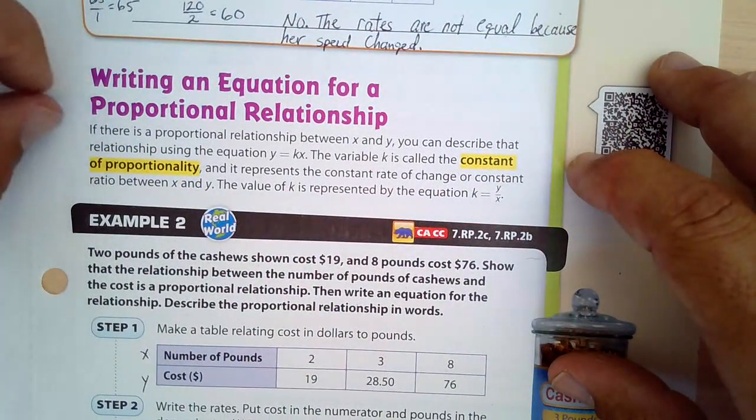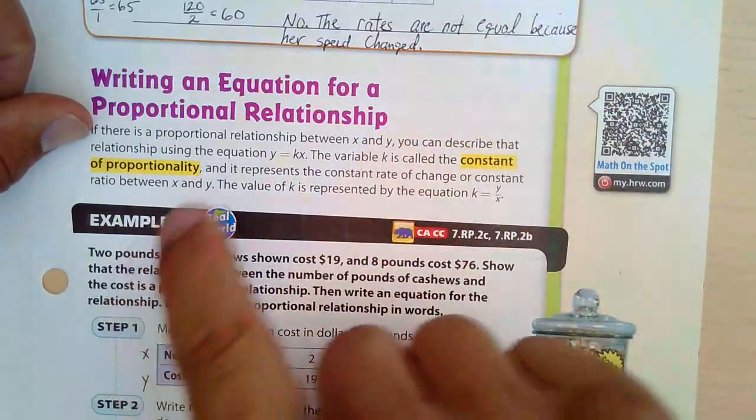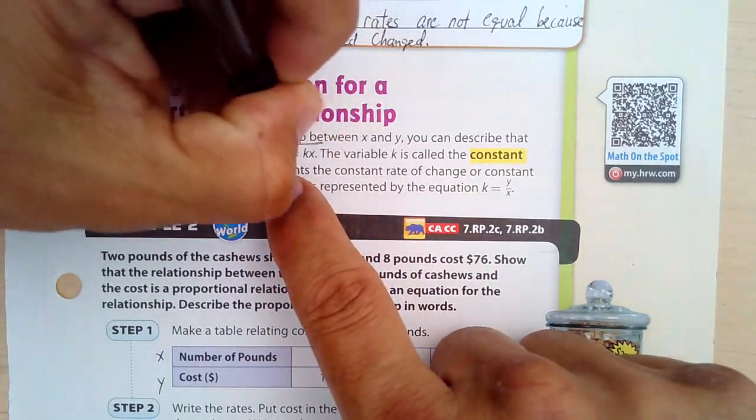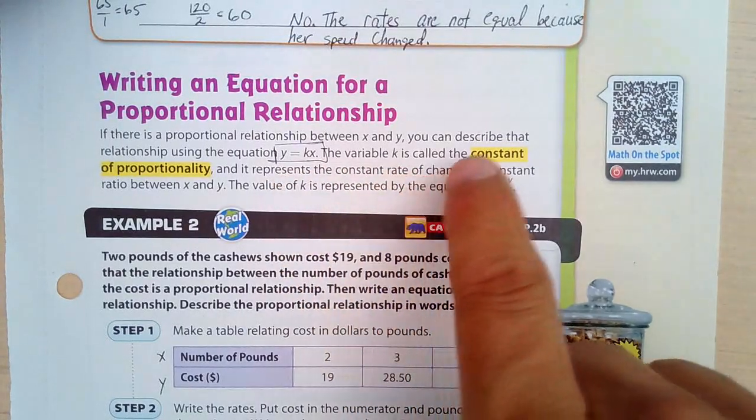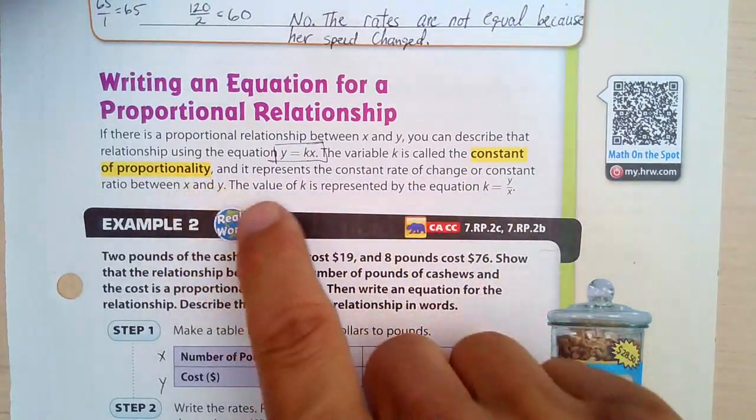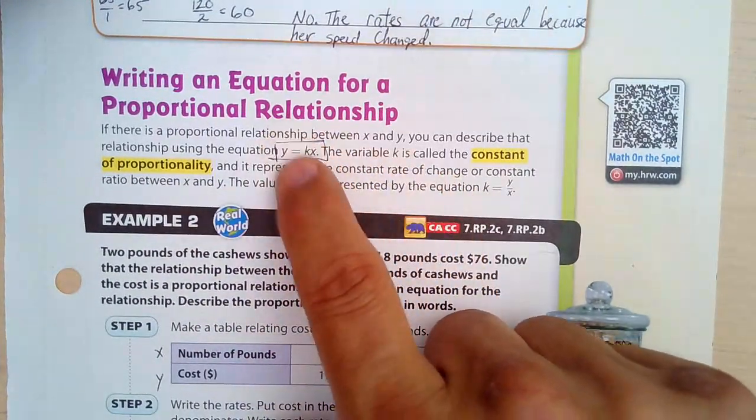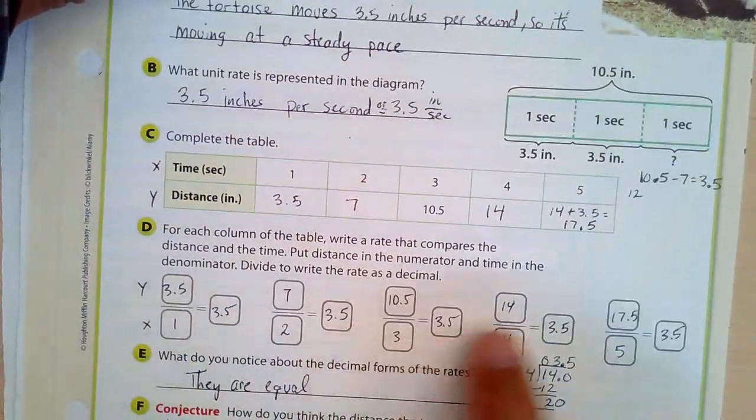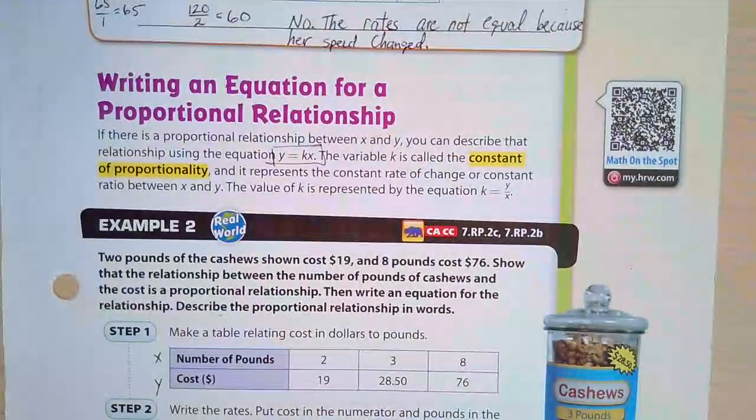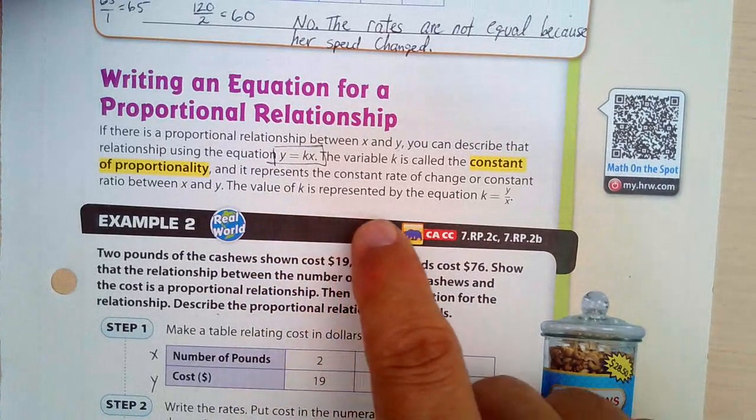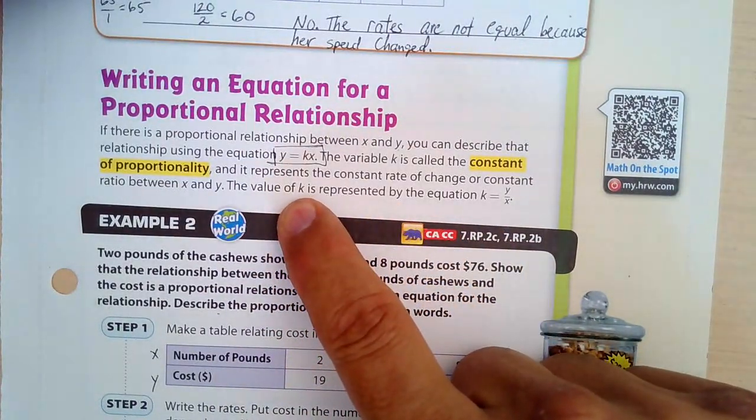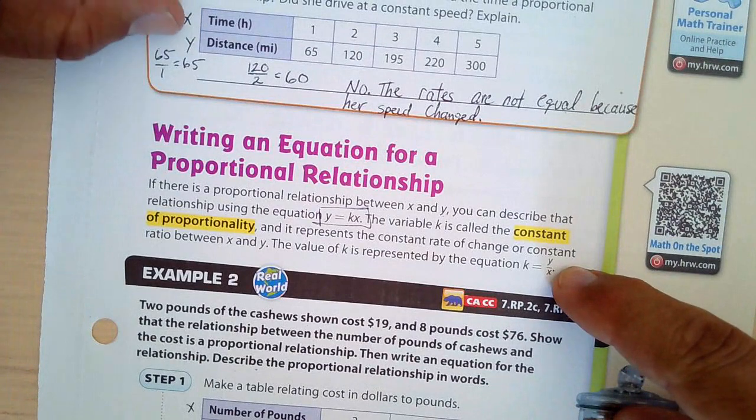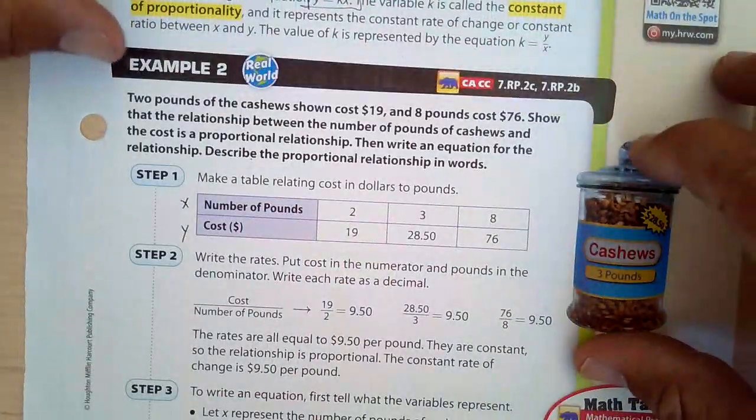Writing an equation for a proportional relationship. If there is a proportional relationship, which we were just looking at, between X and Y, you can describe that relationship using the equation Y equals KX. We're going to use this a bunch. The variable K is called the constant of proportionality. And it represents the constant rate of change. So that K is our constant rate of change. So over here, our K over here, the K was 3.5. The value K represented in the equation. Okay. So if you want to find that rate of change, you would take the Y value divided by the X value. Does that sound familiar? That's what we were doing over here. Y divided by the X right there.